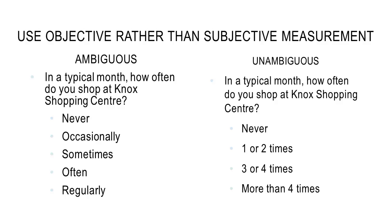Whenever we can have an objective measurement, we want that ahead of a subjective one, particularly when looking at behaviours. We might ask what someone did in the last week to get recall of recent behaviour, or ask about a typical week or typical month on average. You can see there are two possibilities for asking about shopping at a shopping centre. Terms like 'occasionally', 'sometimes', and 'often' on the left are very subjective — they'll mean different things to different people. Whereas associating numbers — never, one time, two times, three times, four times — is objective, an actual measurement of the behaviour.